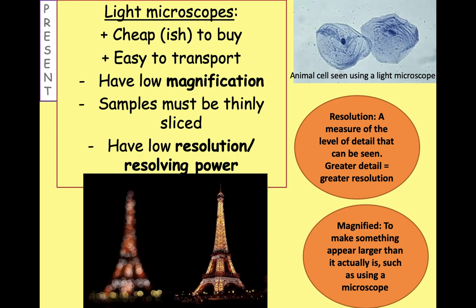This slide is weighing up the good and bad parts about light microscopes — evaluating them. The reason we have them in school is because they're affordable and easy to transport between classrooms for different biology classes. But the problem is they have really low magnification — big enough for us to see cells, but not big enough to see everything we want. The samples have to be very thinly sliced, so if you've got something valuable, the last thing you want to do is slice it thin. They also have low resolution or low resolving power. There are definitions here if you'd like to pause the video and write them down.